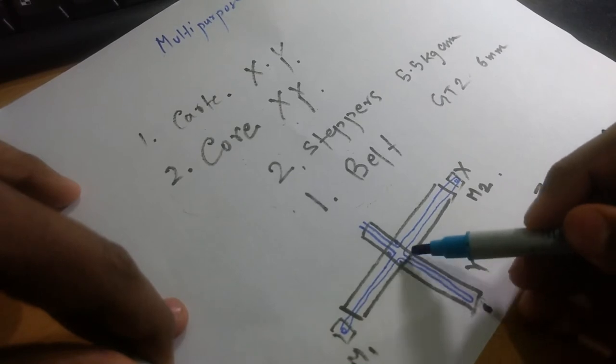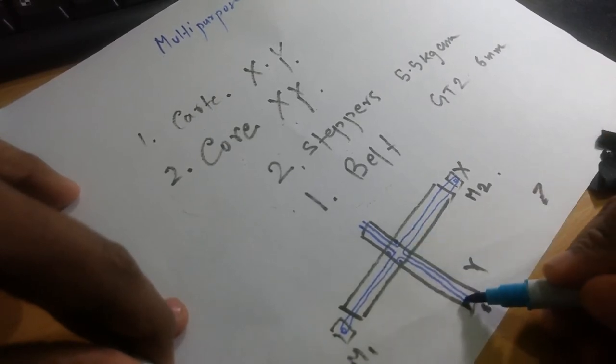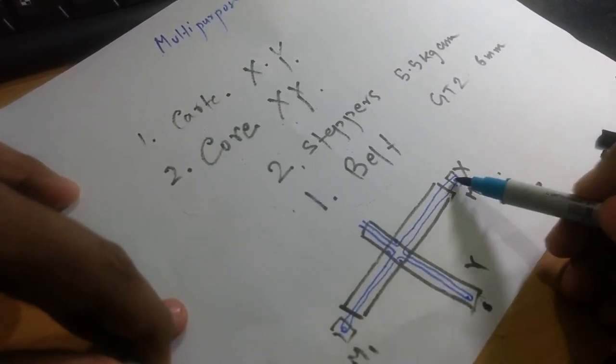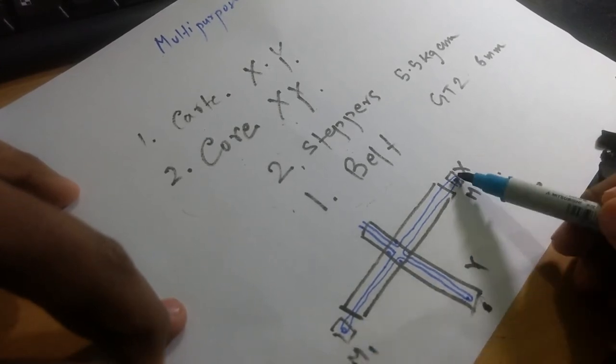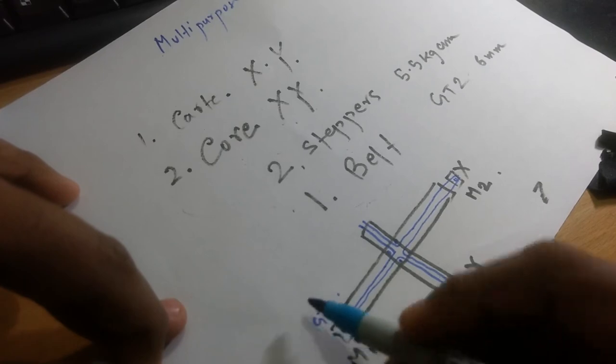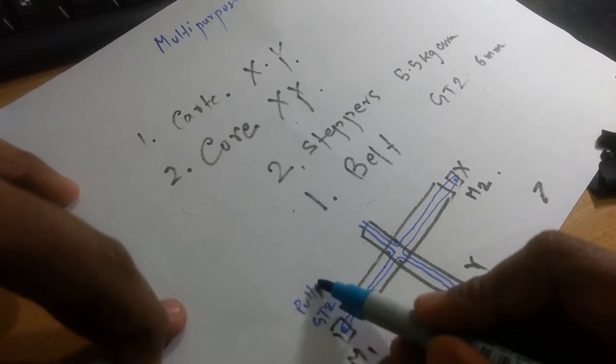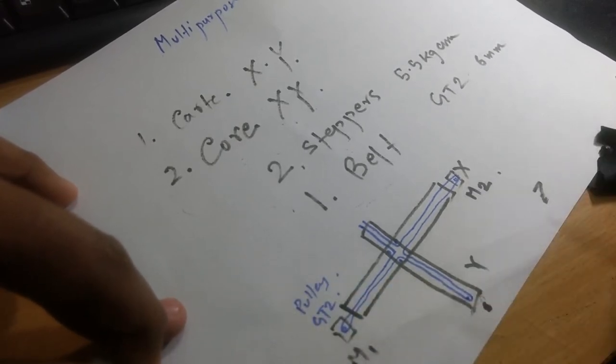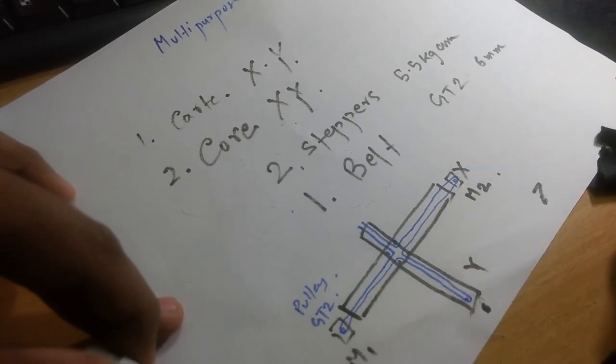Here one pulley, and one another pulley. So there will be four pulleys here, another one, five. And these two are the motors. I am using GT2 pulley here. So this is how the belt will be connected.